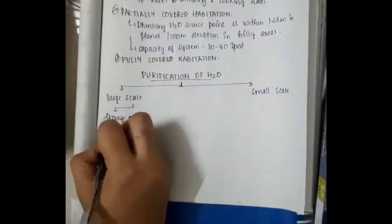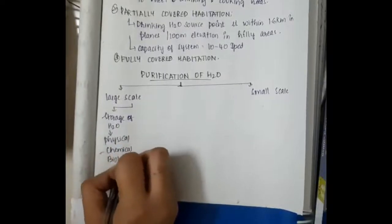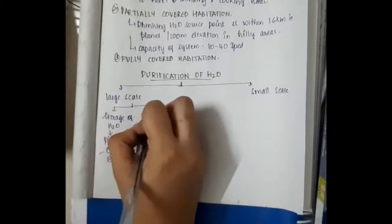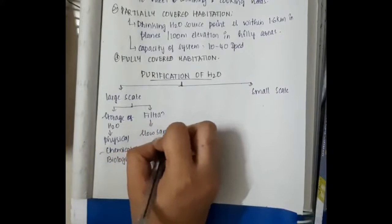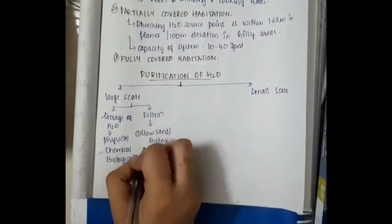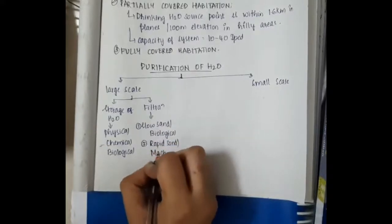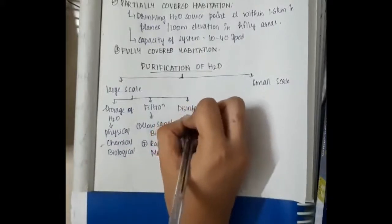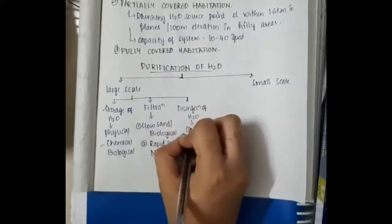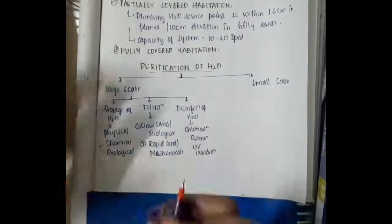Purification of water can be divided into two types: large scale purification and small scale purification. In large scale purification it includes storage of water by physical, chemical, and biological means. It also includes filtration like slow sand or biological filters, and rapid sand or mechanical filters. The third type of large scale purification is disinfection of water as chlorination, ozonation, and UV irradiation.